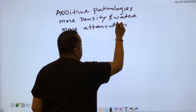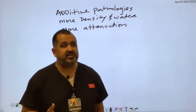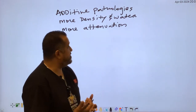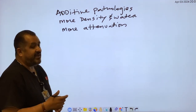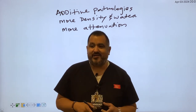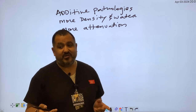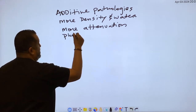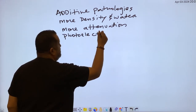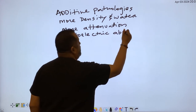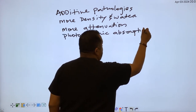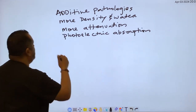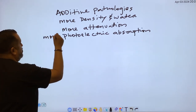Attenuation is the absorption of energy with the loss of intensity. So attenuation is going to occur. Now if you know your interactions with matter, what interaction of matter is responsible for attenuation? It's going to be photoelectric. So I tell my students to know the term photoelectric absorption because all your energy is being absorbed back into the tissue.